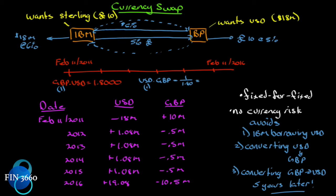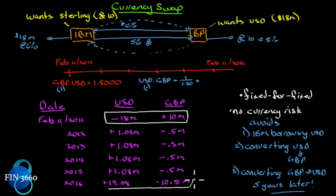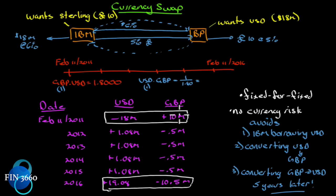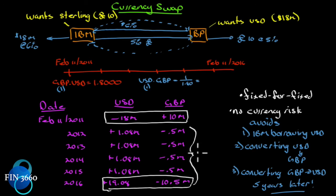Notice the important difference from the interest rate swap: on day one, the principal amount actually changes hands. On the final day the principal comes back. IBM gives out dollars and gets those same dollars back; BP gives out pounds and gets those same pounds back. The currency risk is taken care of there. The interest payments during that period protect each party in their domestic market in terms of the interest in their domestic currency.